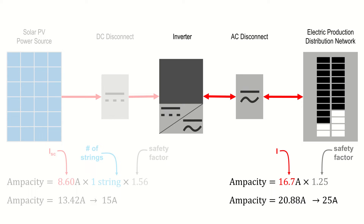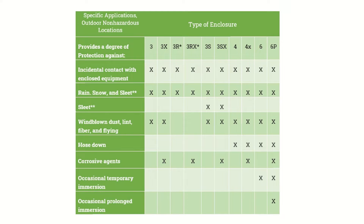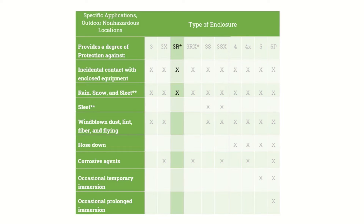You'll also need to consider the environmental conditions that the disconnect switch will be exposed to. The enclosure itself must be rated for the environment that it's installed in. Since these interconnections are typically installed outside on exterior walls near the electric meter, a NEMA 3R enclosure will usually suffice. Type 3R enclosures protect against falling rain, sleet, snow, and external ice formation. You can review the 2020 NEC 705.11 for more details.